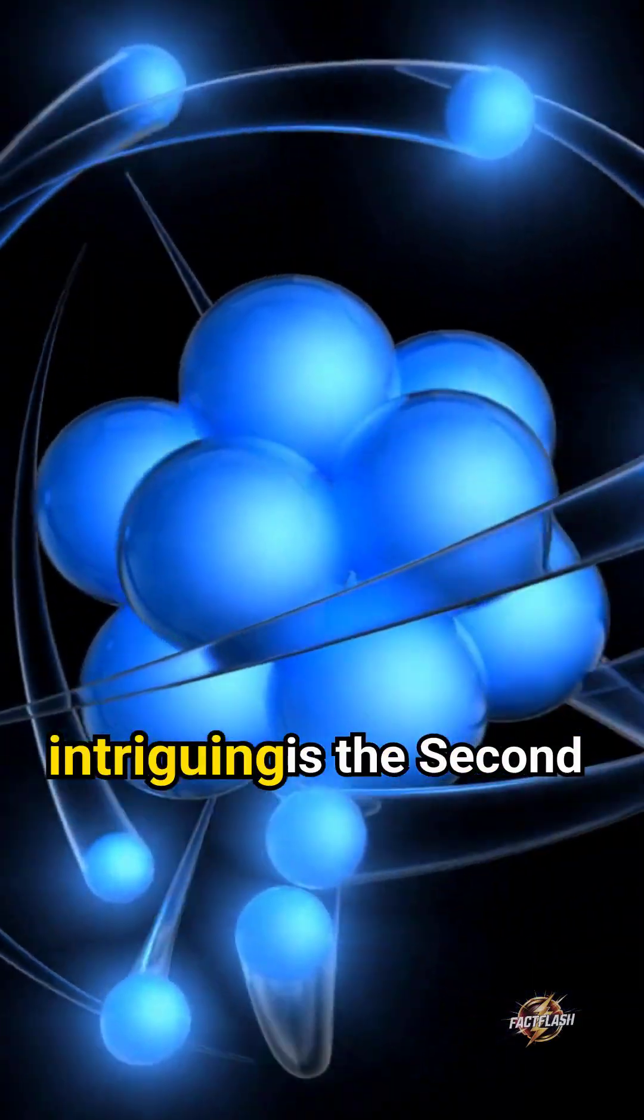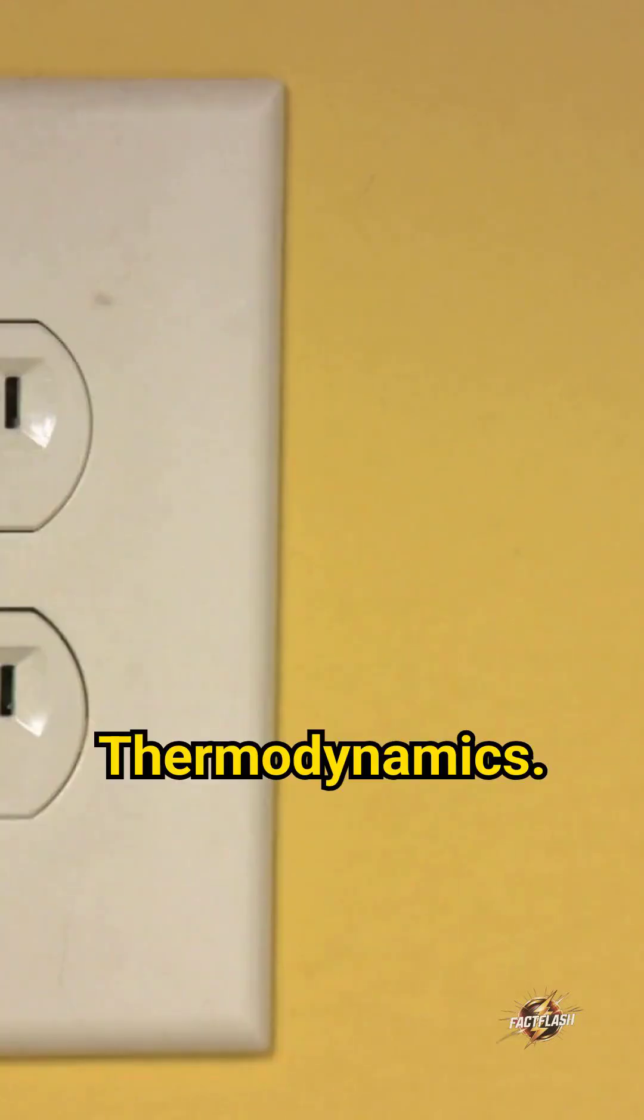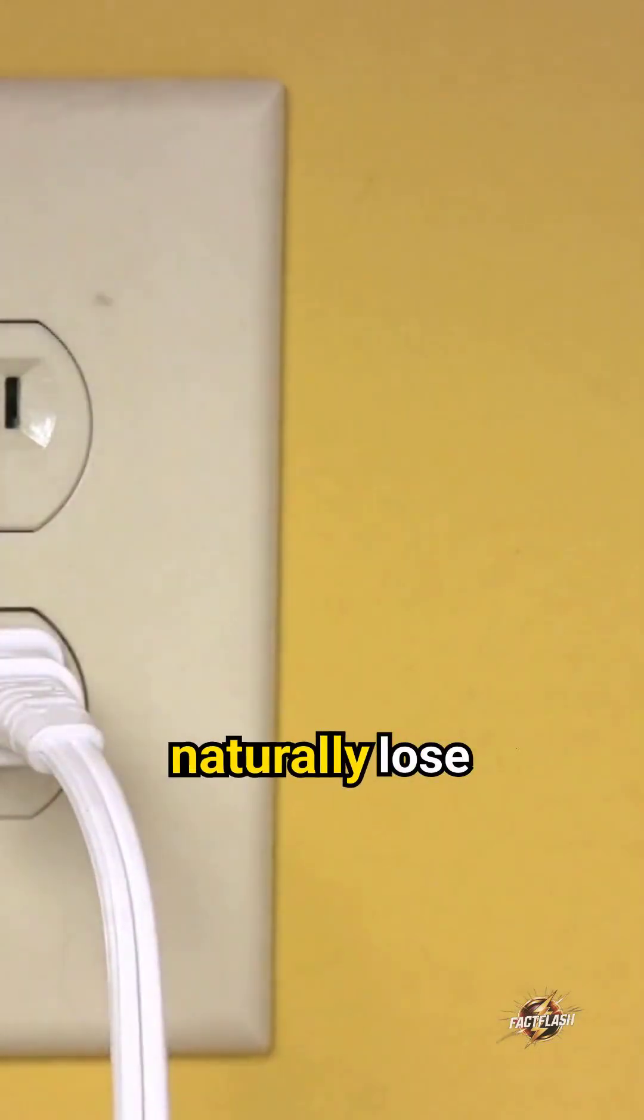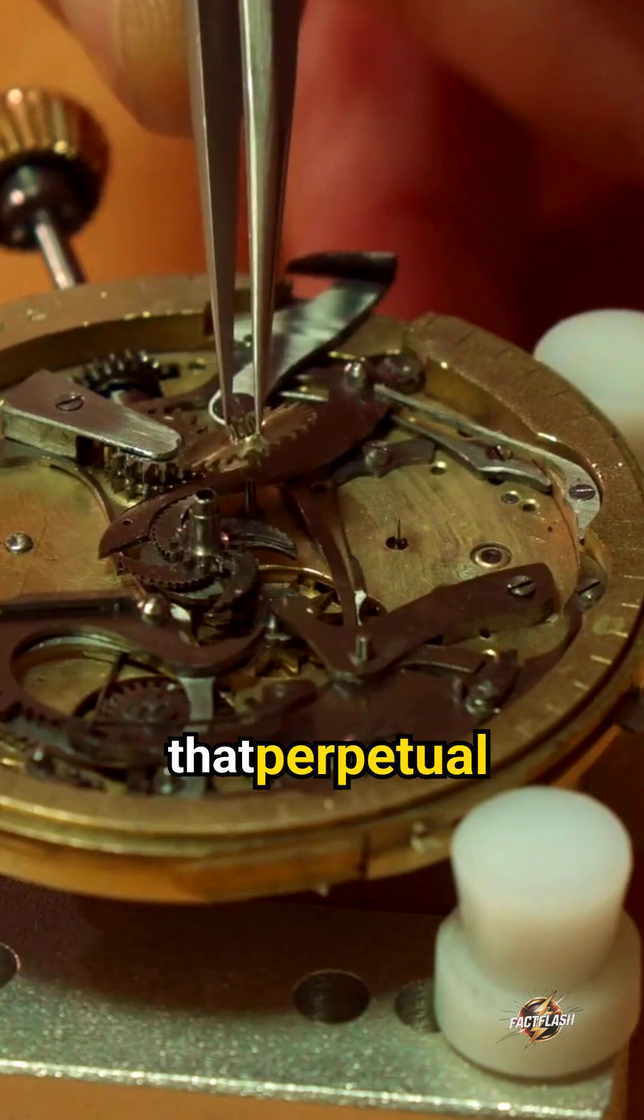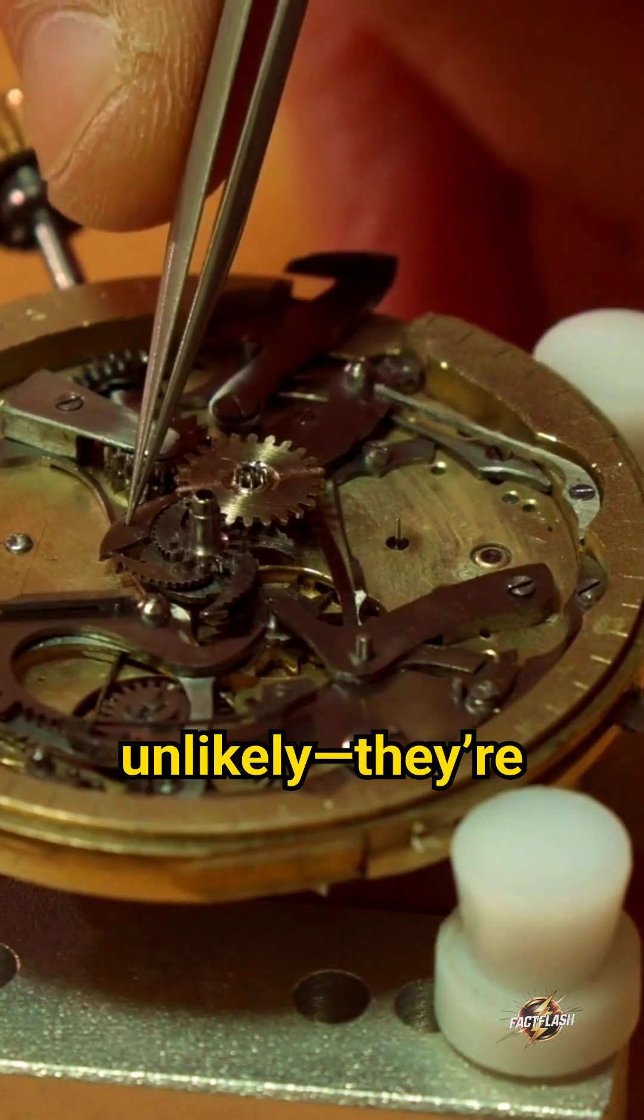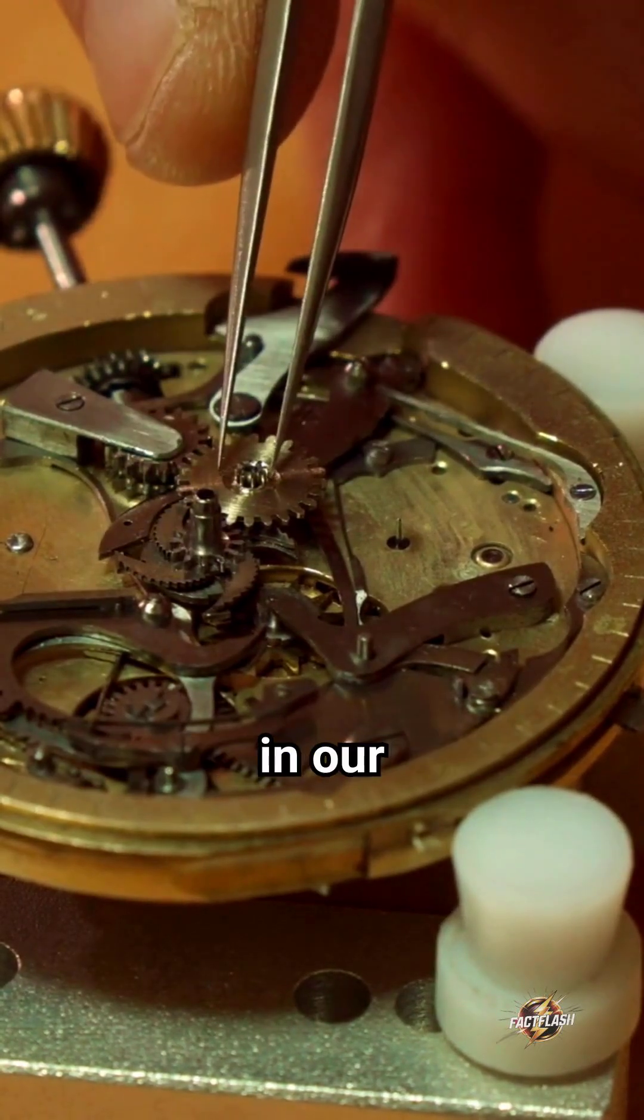Even more intriguing is the second law of thermodynamics. It tells us that energy systems naturally lose efficiency over time due to entropy. This means that perpetual motion machines are not just unlikely. They're physically impossible in our universe.